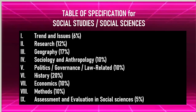First, let us know the table of specifications for social studies. Number one: trends and issues, 6%. Number two: research, 12%. Geography, 17%. Sociology and anthropology, 10%. Politics, governance, law-related, 10%. History, 20%. Economics, 10%. Methods, 10%. Assessment and evaluation in social sciences, 5%.